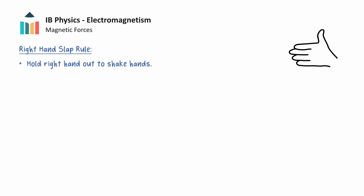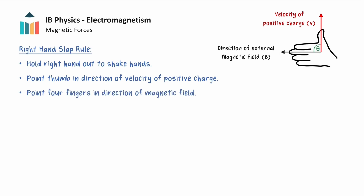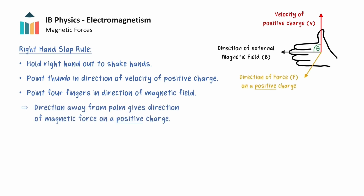We can determine the direction of the magnetic force on a positive charge moving in the magnetic field using the right-hand slap rule. Hold the right hand out as if going to shake hands. The thumb should point in the same direction as the velocity of the moving positively charged particle, and the four fingers should point in the direction of the external magnetic field. The direction of the magnetic force on a positive charge is then given by the direction away from the palm of the right hand — the same direction as when we move the right hand to slap an object. The force due to a magnetic field is always perpendicular to the velocity of the charged particle and the magnetic field.